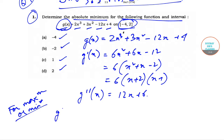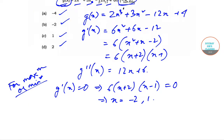We have g'(x) equal to 0, that implies 6(x + 2)(x - 1) = 0. That will imply that x is equal to -2 or 1. This is what we have got so far.